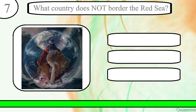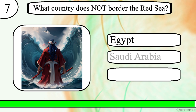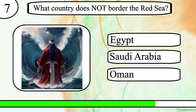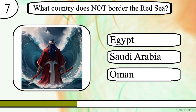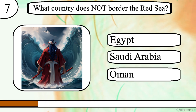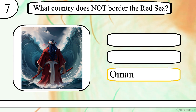Question 7. What country does not border the Red Sea? Egypt, Saudi Arabia or Oman? The correct answer is Oman.